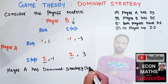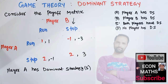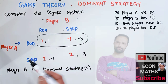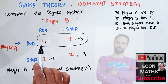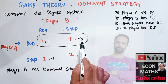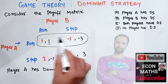Player A's dominant strategy is stop. Now let us see whether player B has a dominant strategy. When player A chooses to run, player B has two options: run or stop. Run gives player B a payoff of 1, stop gives him a payoff of negative 3. Obviously player B will choose to run, as it gives him more payoff.